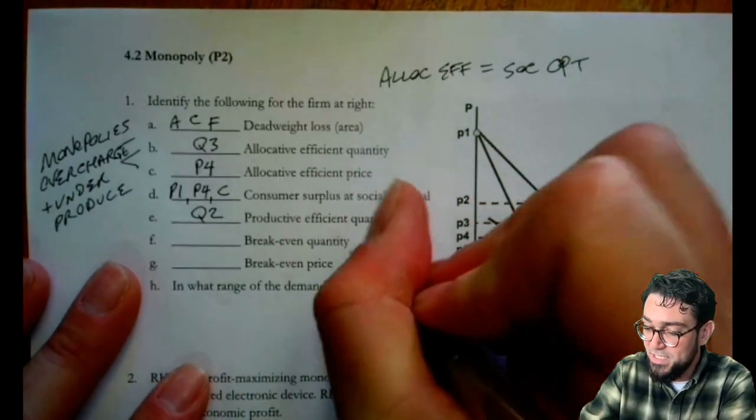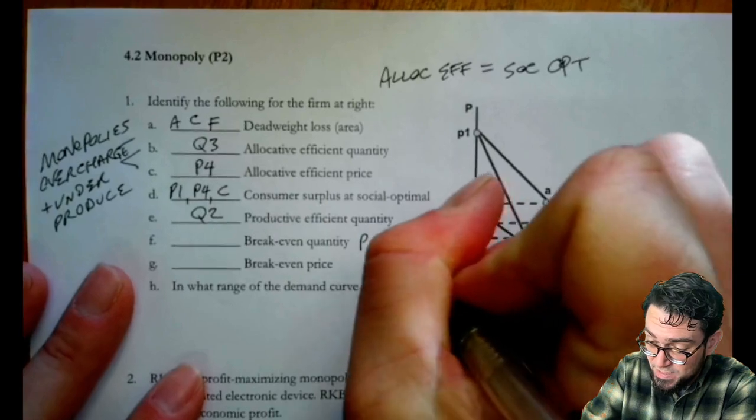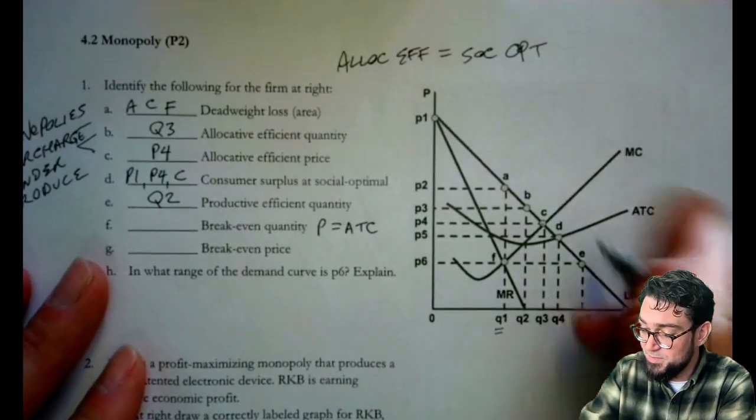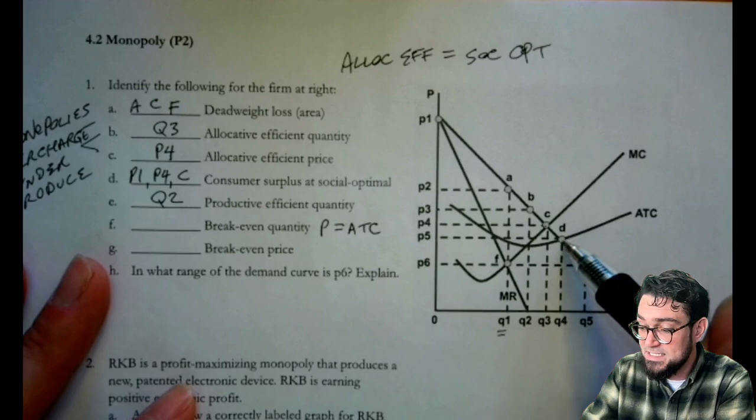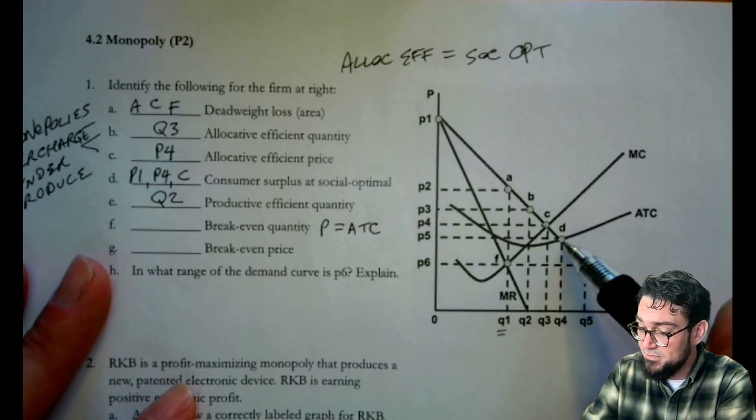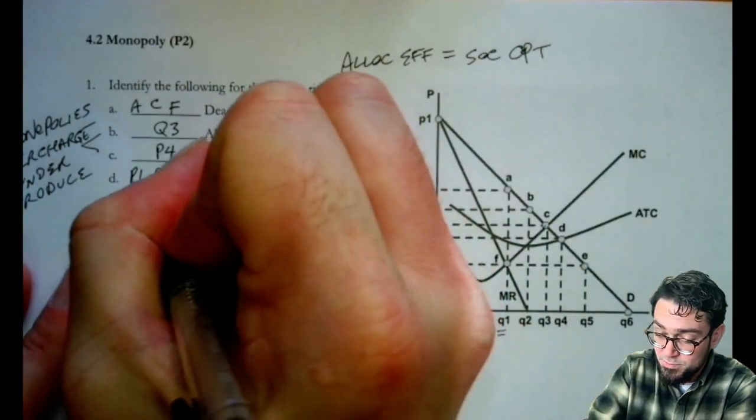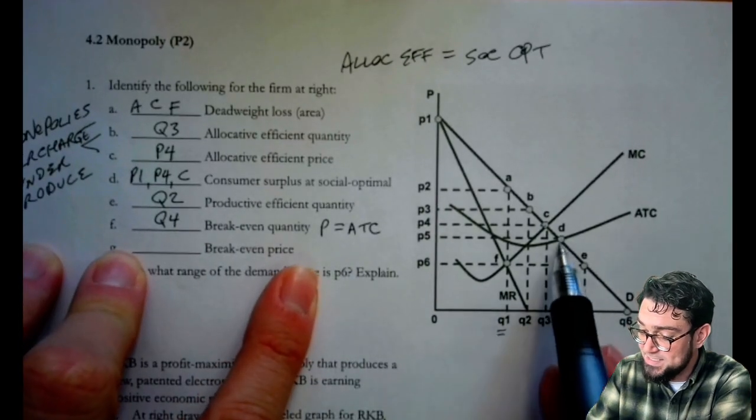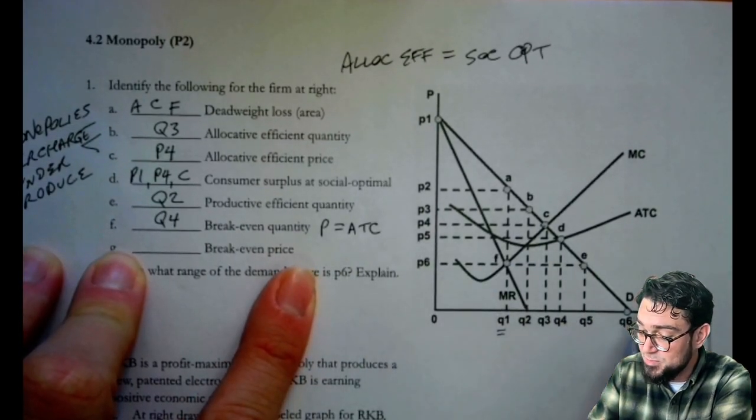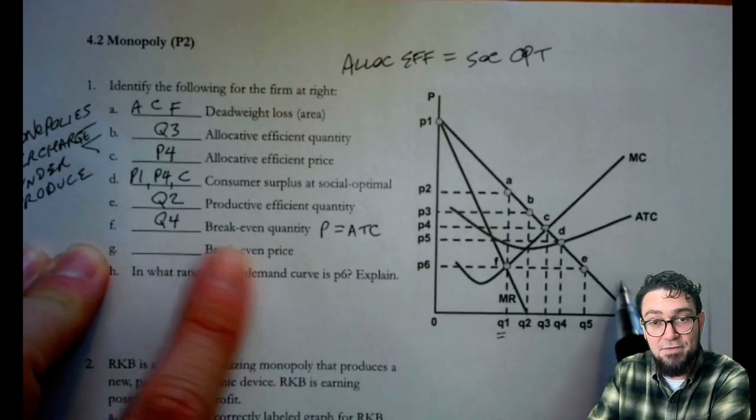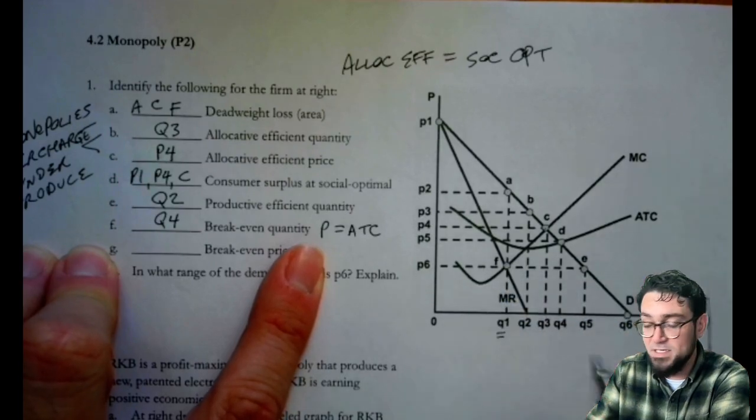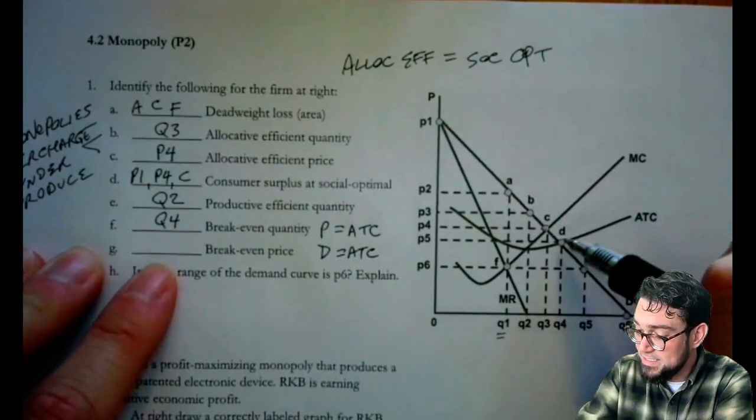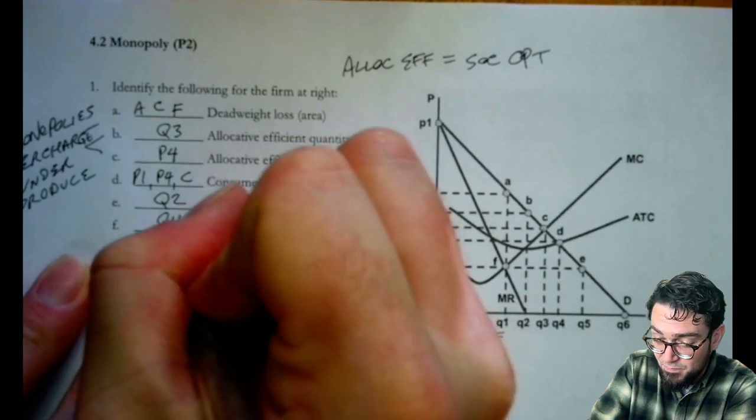Breakeven quantity. Well, breakeven means that price is equal to the ATC. That's where they're earning zero economic profits. So price is coming from our demand curve. That's going to equal ATC at point D, and therefore that quantity is Q4. And then the price that corresponds to that where price is equal to the ATC is P5. So I'm starting out to know breakeven is where demand and ATC are crossing each other. We can also write demand equals ATC, and that's occurring then at P5.